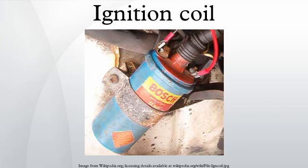In a coil meant for a dual spark system, the secondary winding has two terminals isolated from the primary, and each terminal connects to a spark plug. With this system, no extra diode is needed since there would be no fuel-air mixture present at the inactive spark plug. In a low inductance coil, fewer primary turns are used, so primary current is higher. This is not compatible with the capacity of mechanical breaker points, so solid state switching is used.